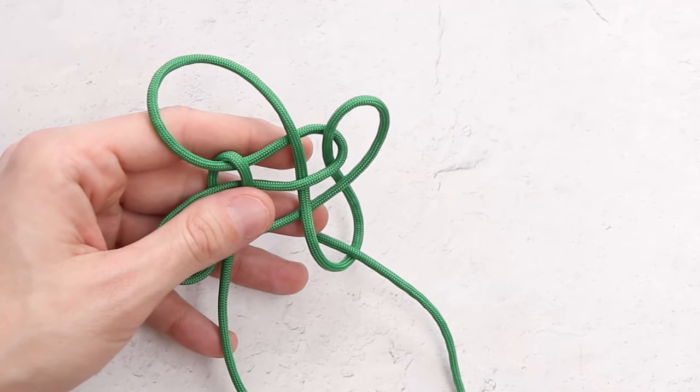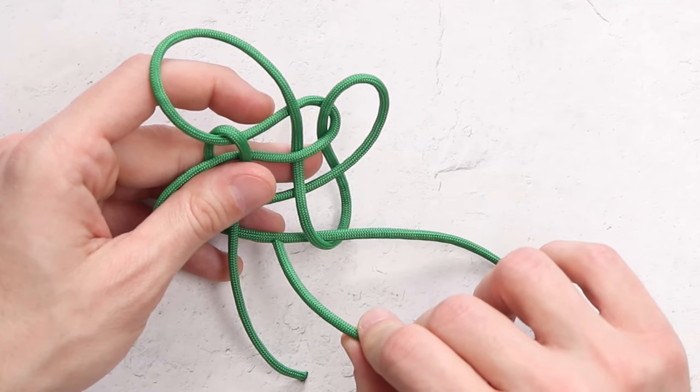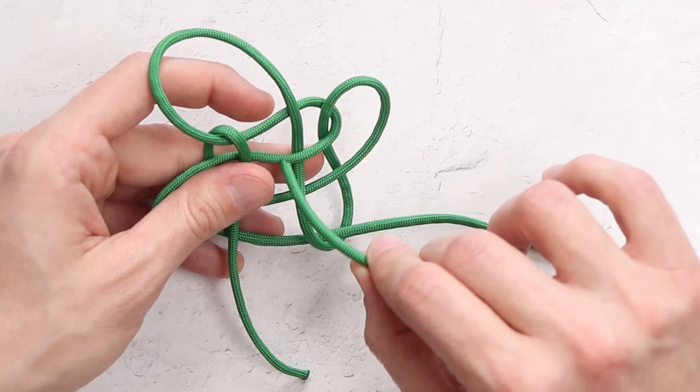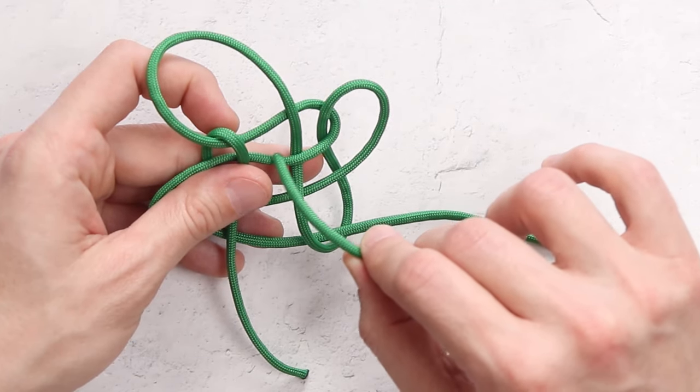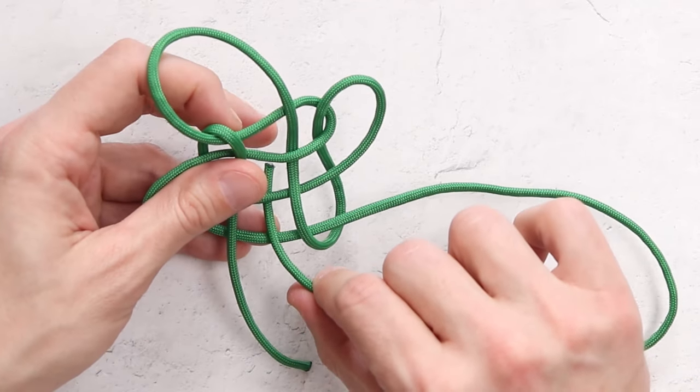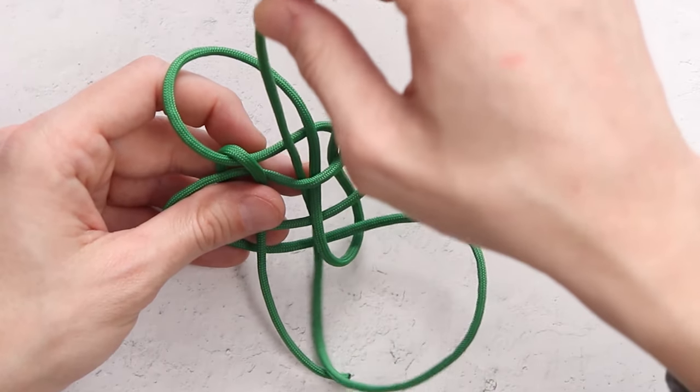And for our final step here, take the same working strand, and we're going to go over top of the bottom strand, underneath the next two, and through the square at the top. So we're going to go over, under two, back over the top, pull it through.